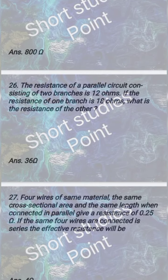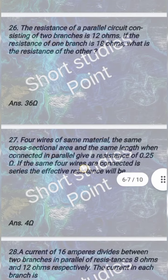The resistance of a parallel circuit consisting of two branches is 12 ohms. If the resistance of one branch is 18 ohms, what is the resistance of the other? 36 ohm.